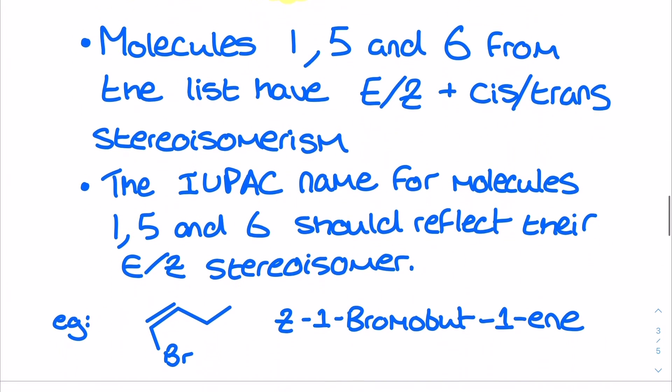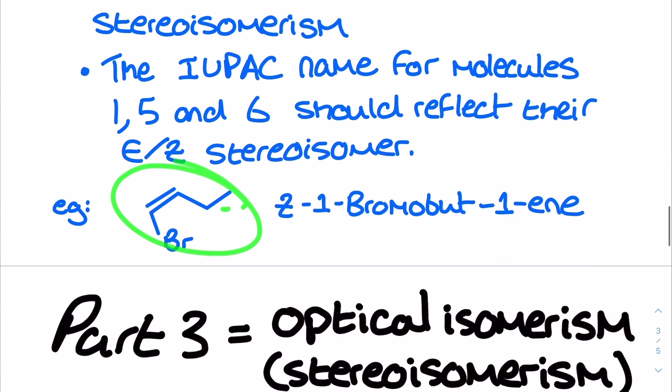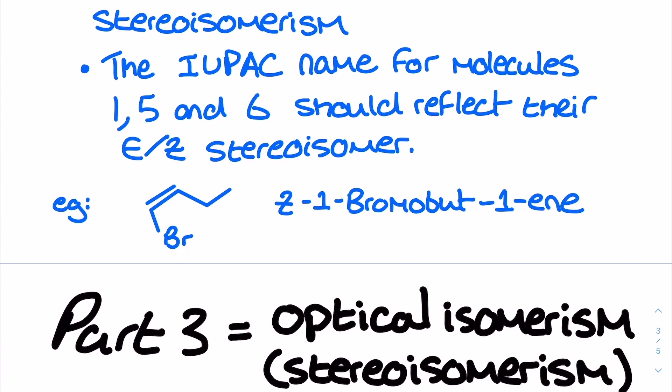To summarize: molecules 1, 5, and 6 from the original list have EZ and cis-trans stereoisomerism. The IUPAC name for molecules 1, 5 and 6 should reflect their EZ stereoisomer — for example, molecule 1 drawn as the Z isomer should be named Z-1-bromo-but-1-ene. Watch out for this in exams: if your molecule has EZ stereoisomers, you should include that letter in the name when presented with a full formula.